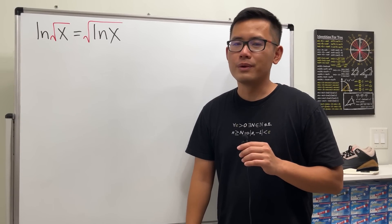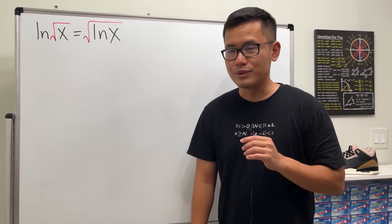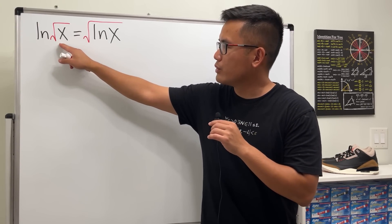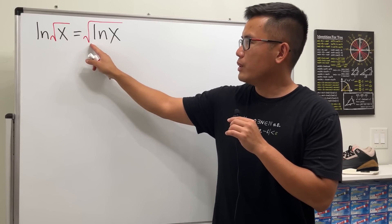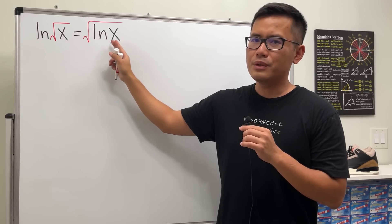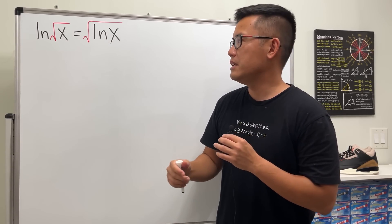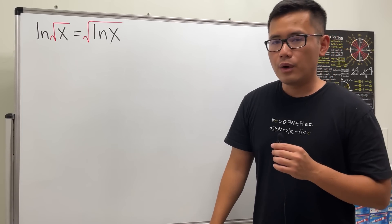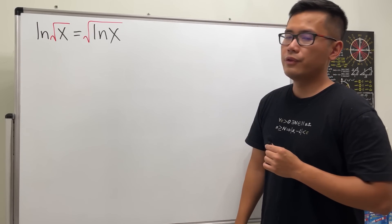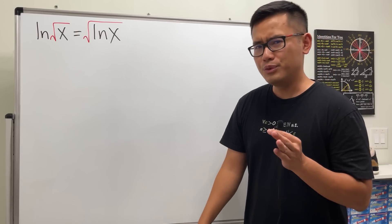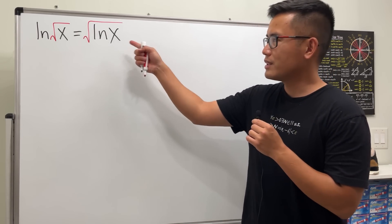Okay, I want to show you guys a very cool logarithmic equation with square root. Here we have the natural log of square root of x, and that's equal to square root of natural log of x. And we know this is not an identity, meaning it's not true for all x. However, this equation is true for two x values. So pause the video and try this first.